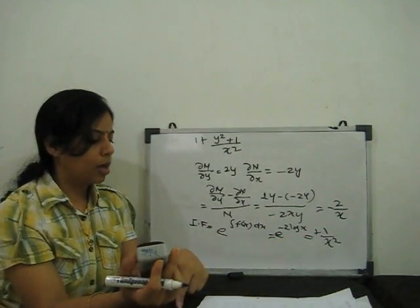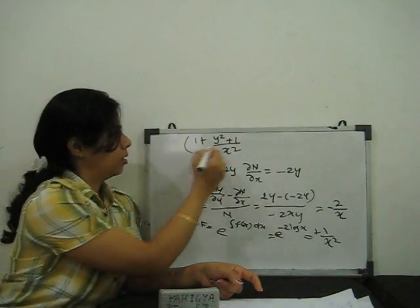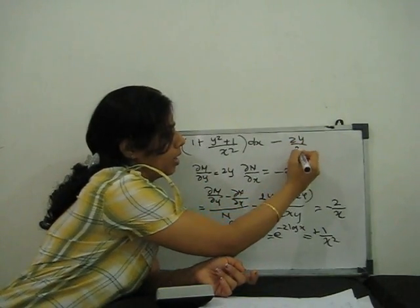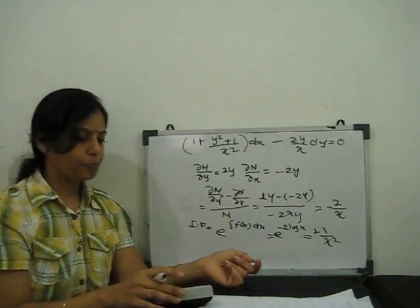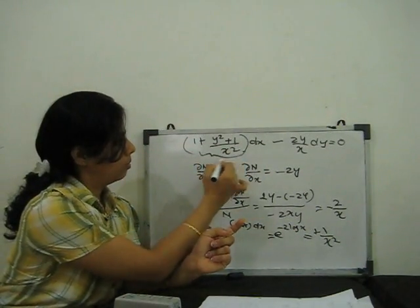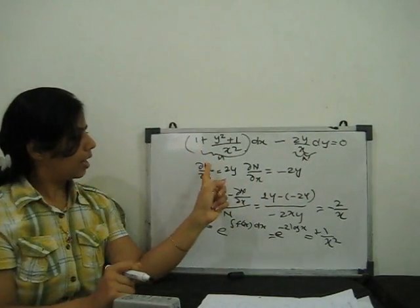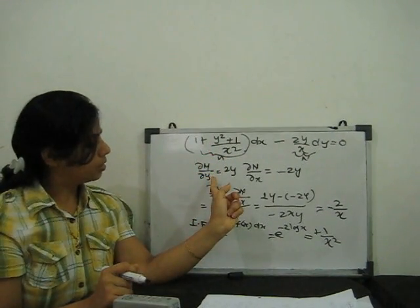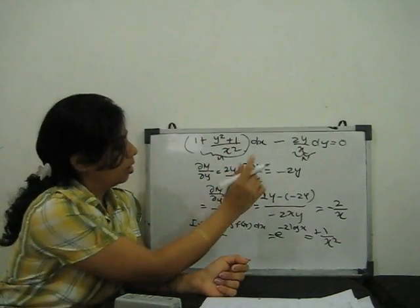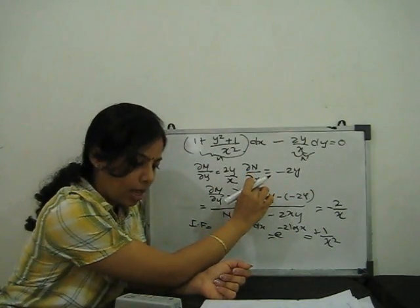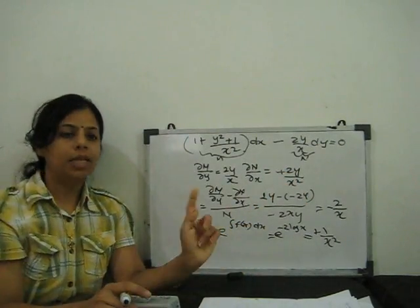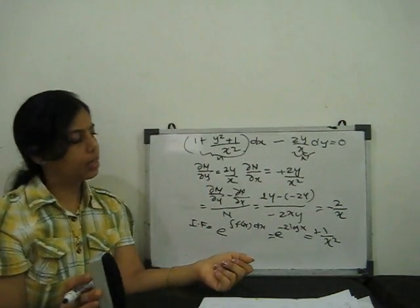When we multiply 1/x² into both terms, our equation becomes (1 + y²/x² + 1/x²) dx - (2y/x) dy = 0. Now checking: ∂M/∂y = 2y/x² and ∂N/∂x = 2y/x². Both are equal, so it is converted into an exact differential equation.